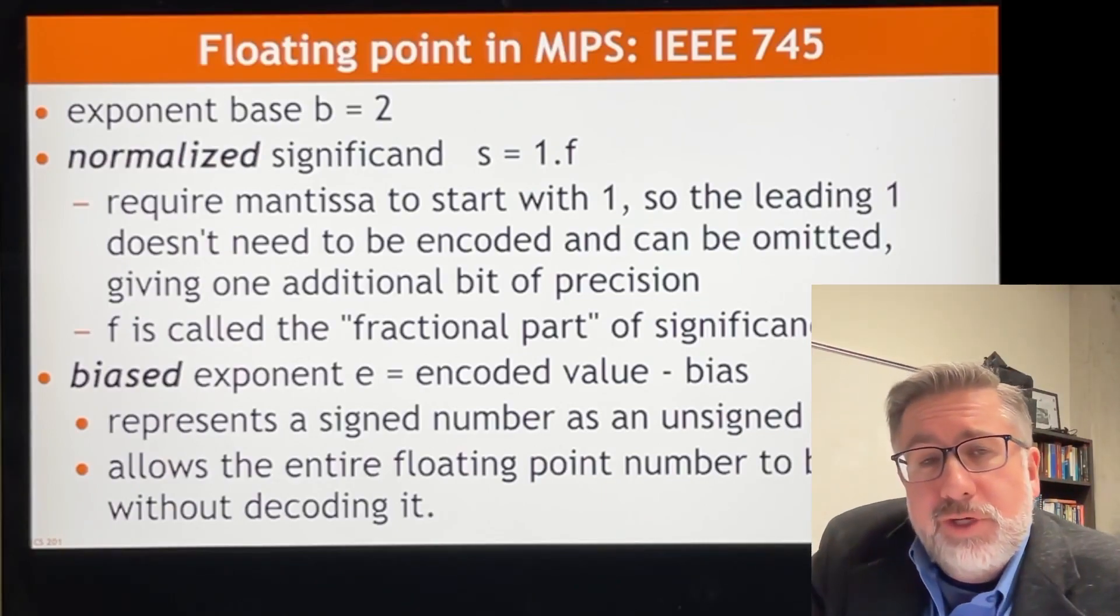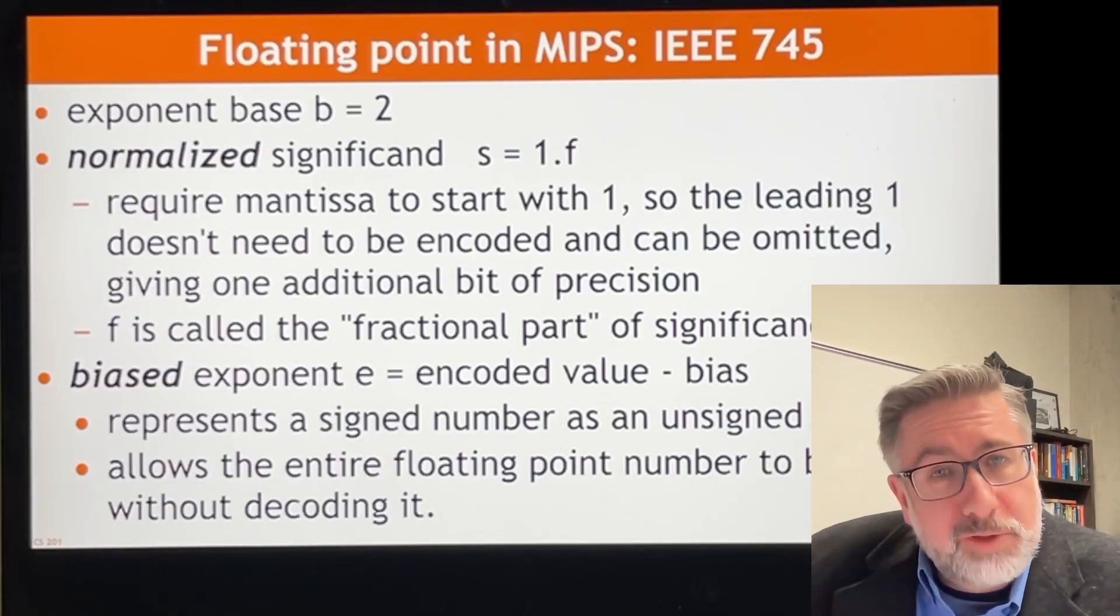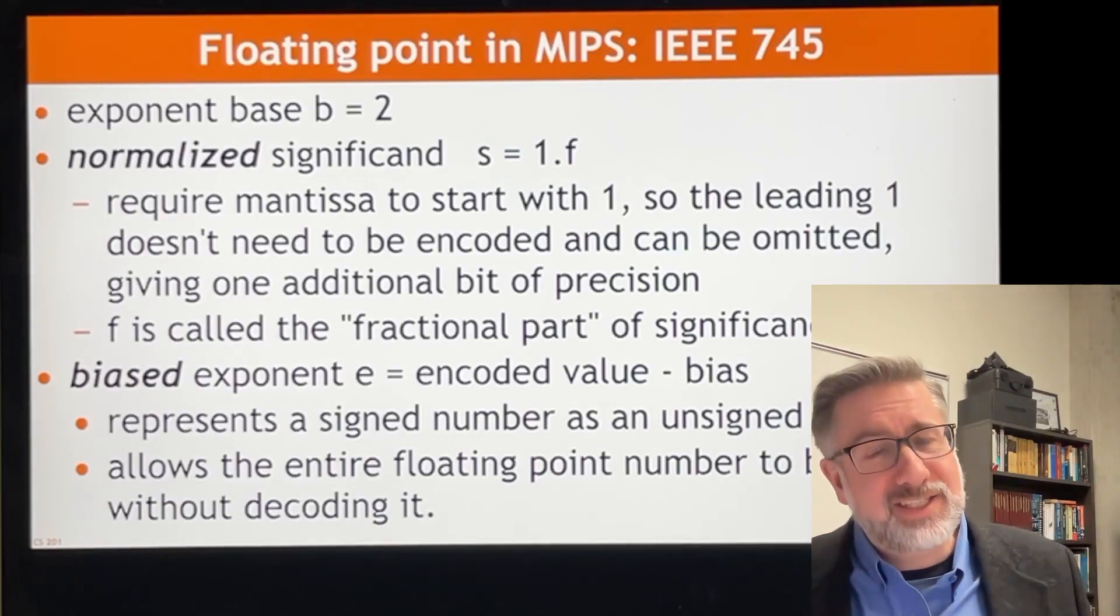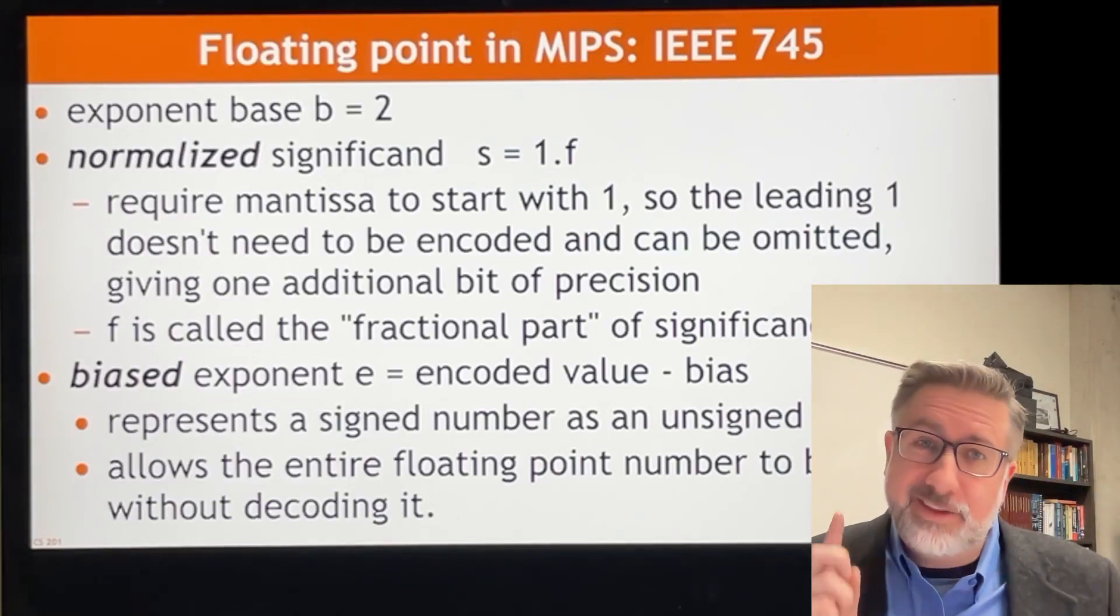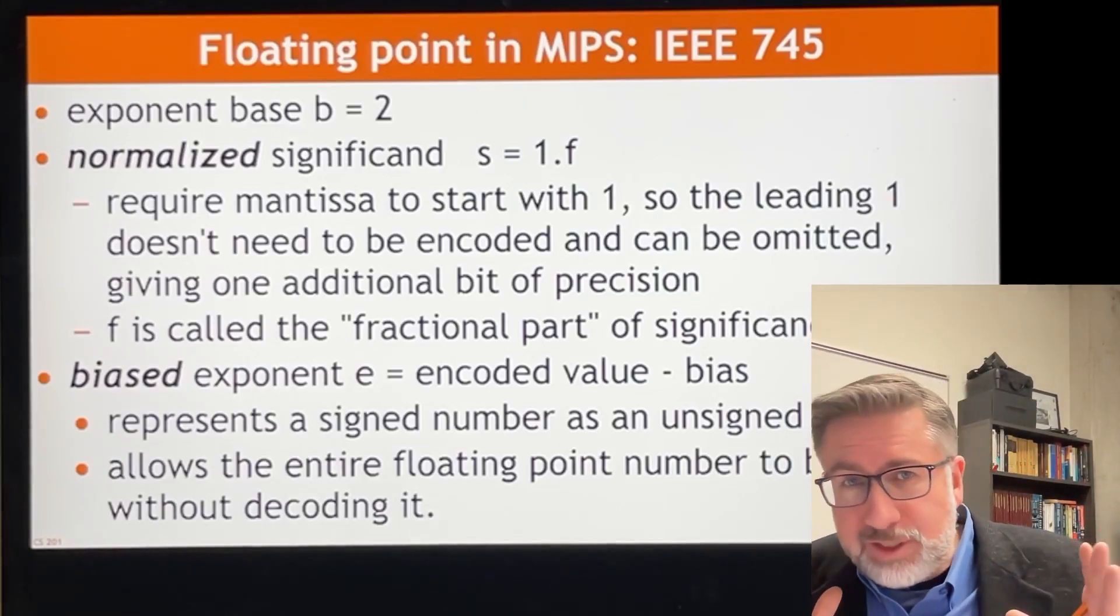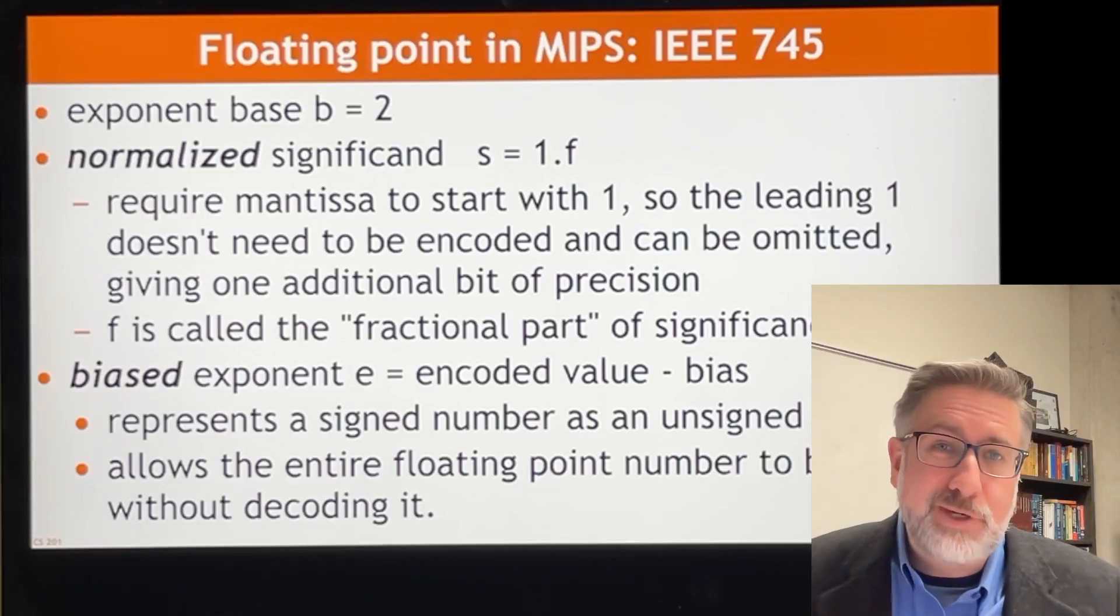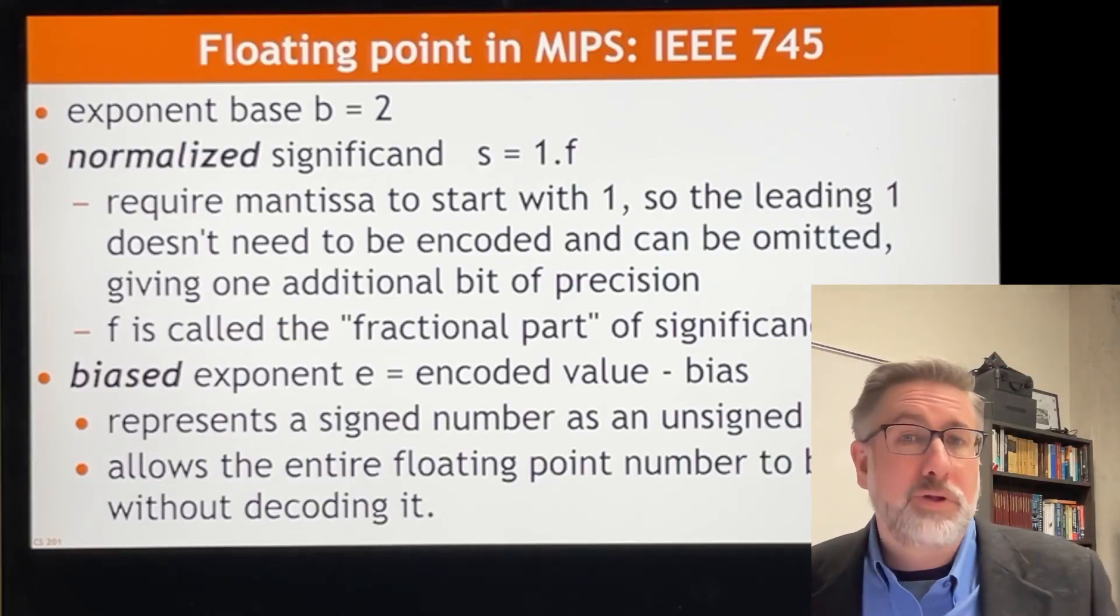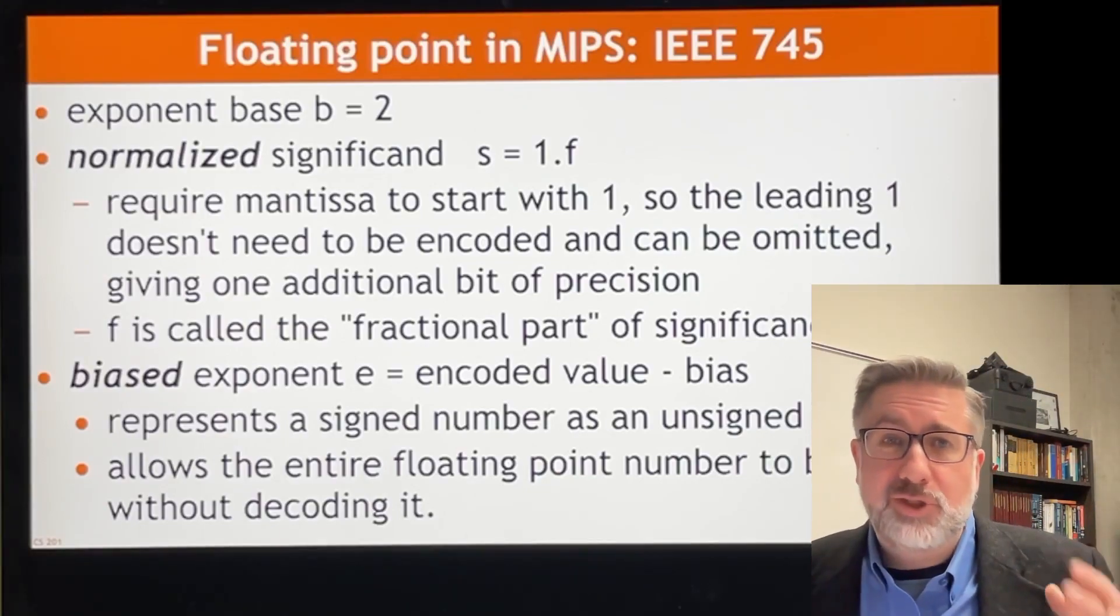The significand we're going to do in a clever way that we call normalized. So instead of just having any significand, we're going to have a significand that always starts with 1 point something. We can do that because we can always shift the significand around if we don't have it. So if we have, for example, 0.1 times 2 to the something,